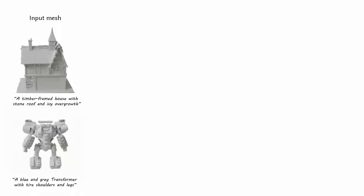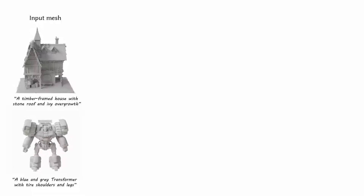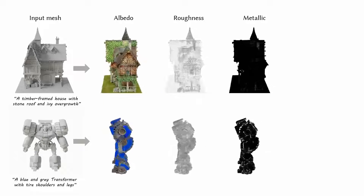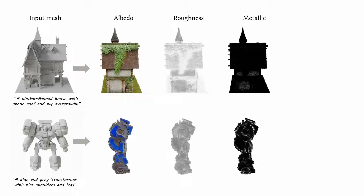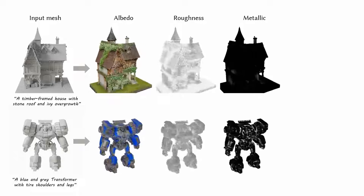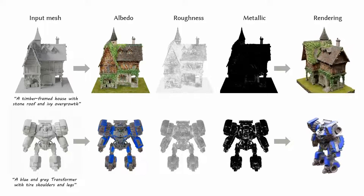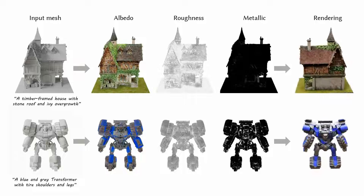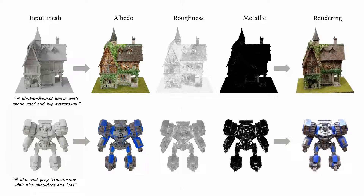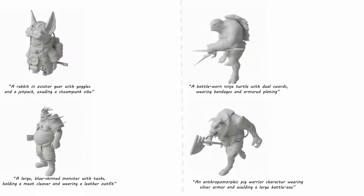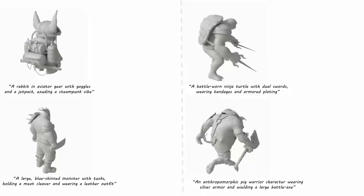Furthermore, we use a series of challenging examples to demonstrate our method's robust generative capabilities. Our method can take the entire mesh as input and generate materials based on the text prompt. These objects are remarkably complex, with self-occlusions, multi-part assemblies, and a wide range of material compositions.